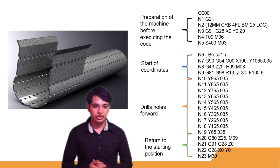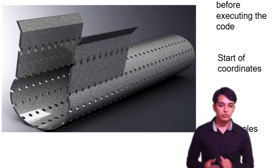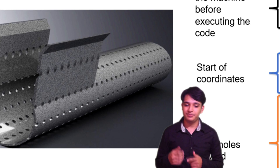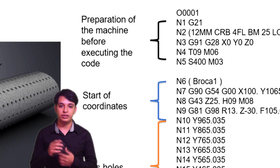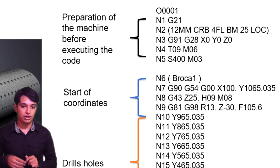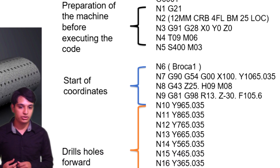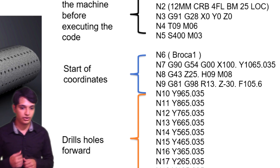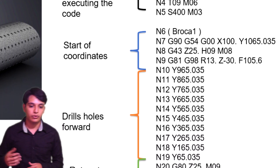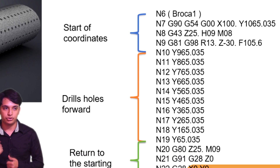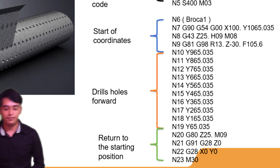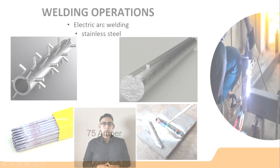This is a piece that we are going to machine using CNC. The program is very simple: the first code is a preparation of the machine before execution, the next code is the start of the coordinate system, then drill holes in a line pattern, then return to the starting position before rotating the piece.